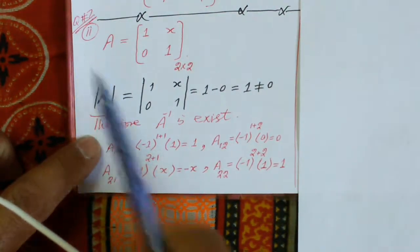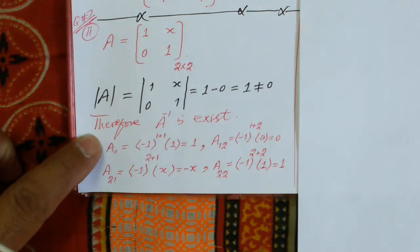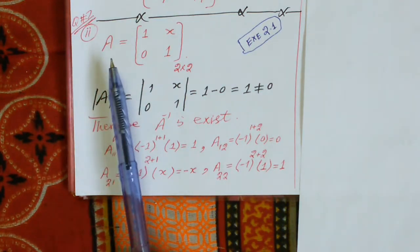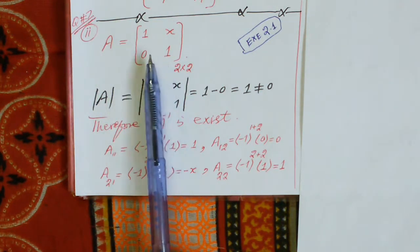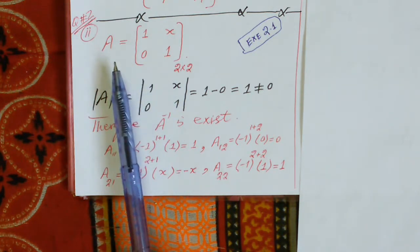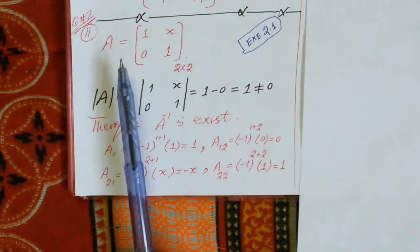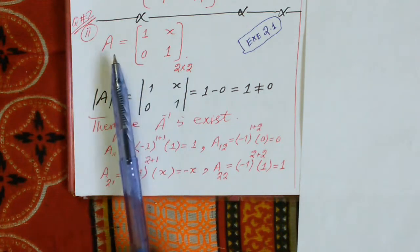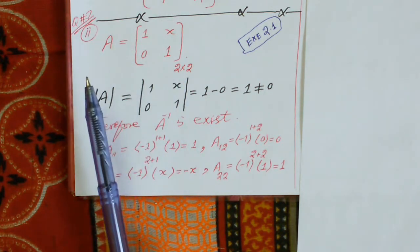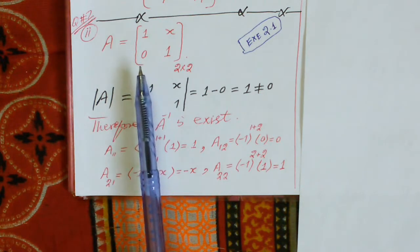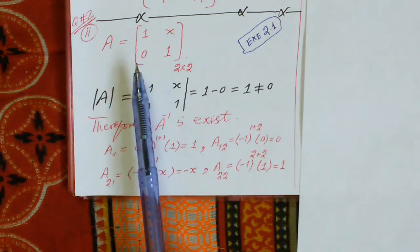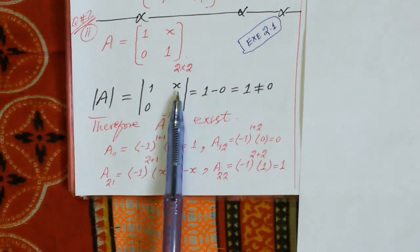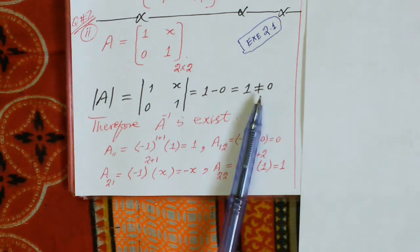Question number seven, part two, Exercise 2.1: calculate the inverse of matrix A. The first condition for the inverse of a matrix to exist is that the matrix must be a square matrix. The order of matrix A is 2×2, so it is a square matrix. The second condition is that the matrix must be non-singular. To check, we calculate the determinant of matrix A: the determinant equals 1 minus 0, which equals 1, and since it is not equal to 0, the matrix is non-singular.